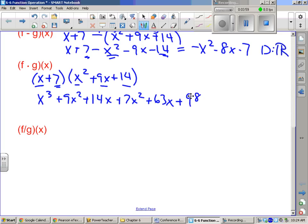Okay. I almost fell for it. Not quite. Alright. Put like terms together. We have an x cubed. I have 9 and 7. That's 16x squared. I have 14 and 63. That's 77x. And then just a plain old 98 at the end.